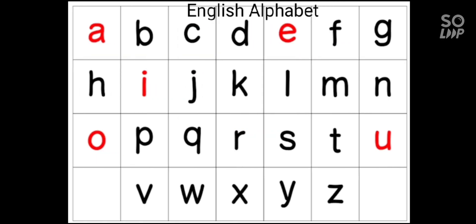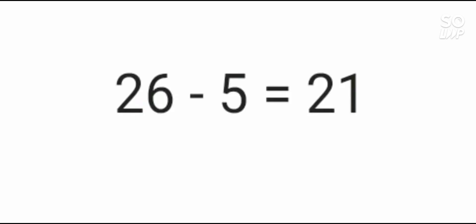These are the English alphabets. There are a total of 26 letters in the English alphabets. Among those, five are vowels. To find the number of consonants, subtract the number of vowels from the number of letters in the English alphabets.